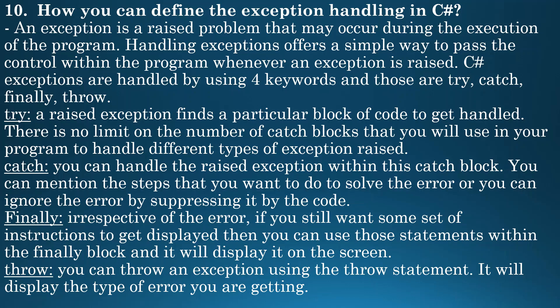The first is the try keyword — a raised exception finds a particular block of code to get handled. There is no limit on the number of catch blocks you can use in your program to handle different types of exceptions raised. Then comes the catch block — you can handle the raised exception within this block. You can mention the steps to solve the error, or you can ignore it by suppressing it in the code.